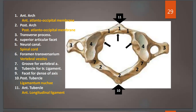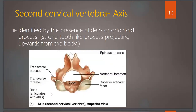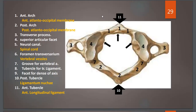The dens — spelled D-E-N-S — facet is number 9. The posterior tubercle, number 10, gives attachment to ligamentum nuchae. The anterior tubercle gives attachment to the anterior longitudinal ligament.